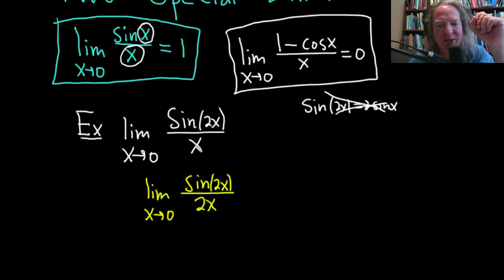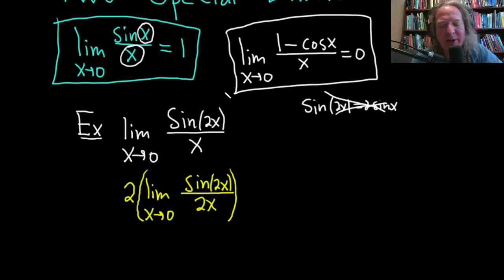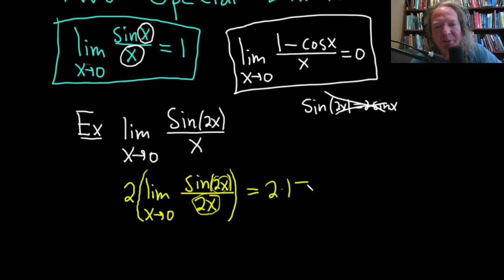These aren't equal yet — we have a 2 in the denominator but not outside. So you put a 2 on the outside to fix it. Basically you're multiplying by 1: it's 2 over 1 times sin 2x over 2x. The 2s cancel, so nothing has really changed, but now it matches the formula. As x approaches 0, 2x also approaches 0, so this whole expression equals 1. This is 2 times 1, which is 2.